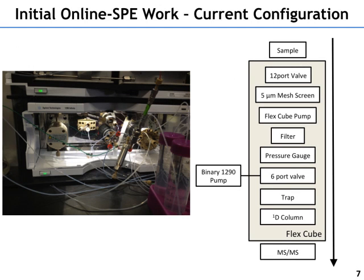This is a snapshot of the FlexCube module. It's a pretty clean setup. We have this six-port valve used to switch the SPE cartridge — basically just a guard column, an analytical guard column — in and out of the flow path to the analytical column. This 13-port valve has 13 inputs and one output effectively. All those Teflon tubes going into our centrifuge tubes are used to pull sample out and into the instrument. Everything in the gray box is housed in the FlexCube. For our analytical pumping system, we're using the binary 1290 pump, and we're using a Varian triple quad for detection.